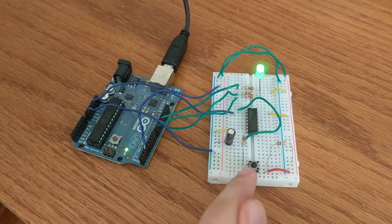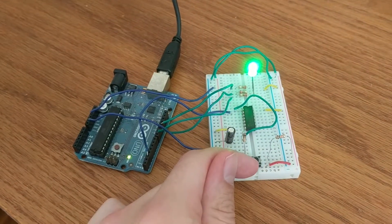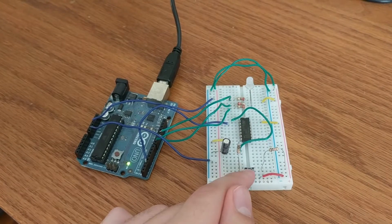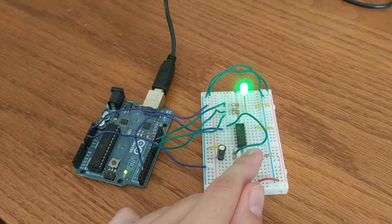When the switch is pressed, it's shorting the far side to the near side, which is connected to ground. When it's unpressed, it's being pulled up to 5 volts through this pull-up resistor.